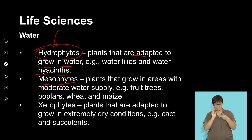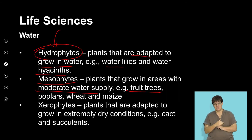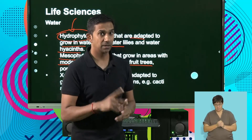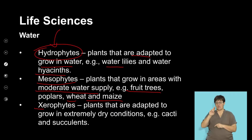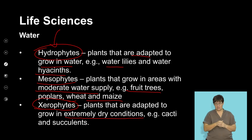Mesophytes are plants that grow in areas with moderate amounts of water supply. Most fruit trees, wheat, and maize are generally mesophytes — they require moderate amounts of water. Xerophytes are plants that are adapted to growing in extremely dry conditions — often found in dry, arid, desert conditions. These include cacti and succulents.